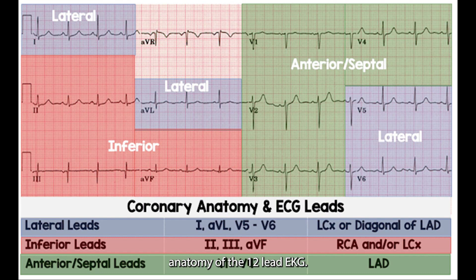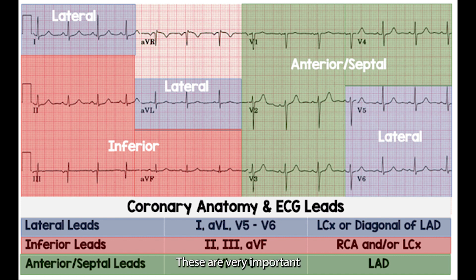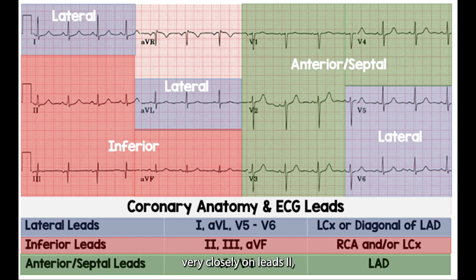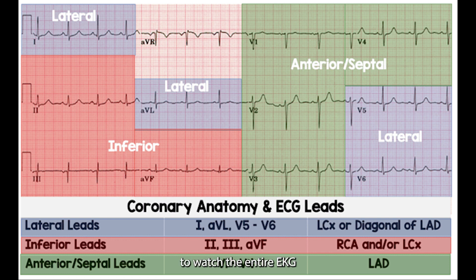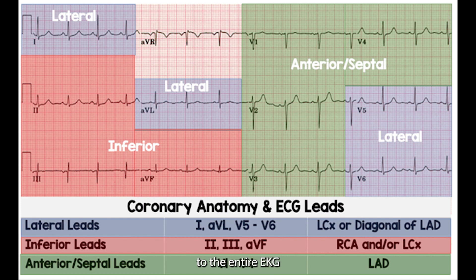This is a breakdown of the coronary anatomy of the 12-lead EKG — our anterior septal leads, inferior leads, lateral leads, and the AVR lead. For example, if monitoring the right coronary artery, watch leads 2, 3, and AVF closely. For the LAD, watch leads V1 through V4. However, it's very important to watch the entire EKG throughout the test, because if ST segment changes appear in any leads, shift to reviewing the full EKG to confirm no more than one vessel has been compromised.